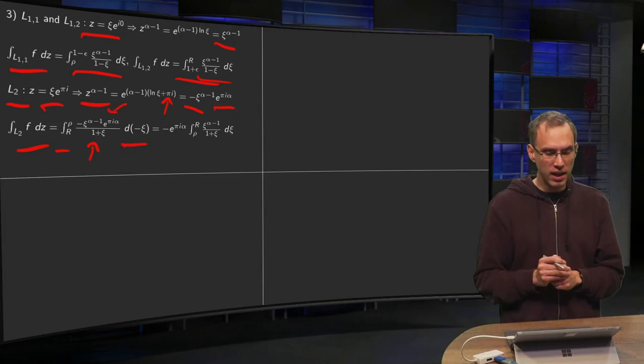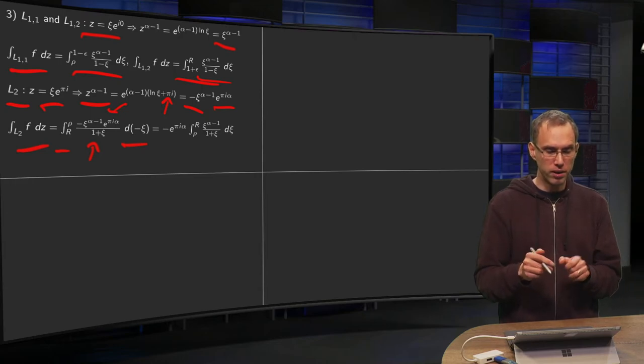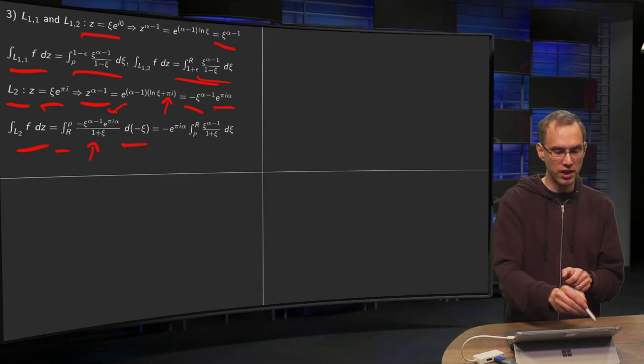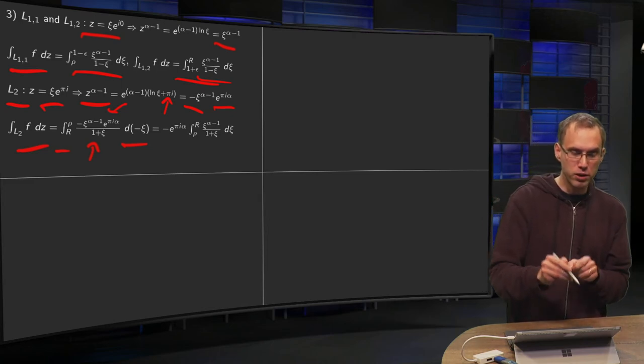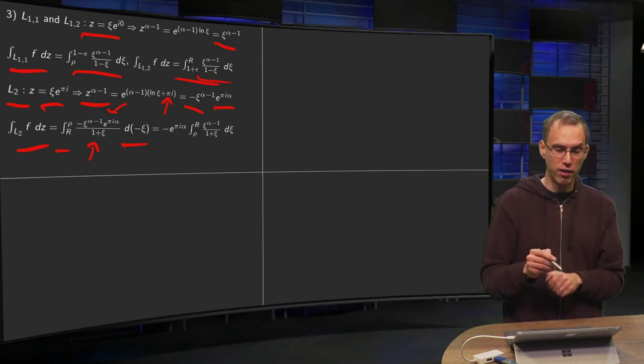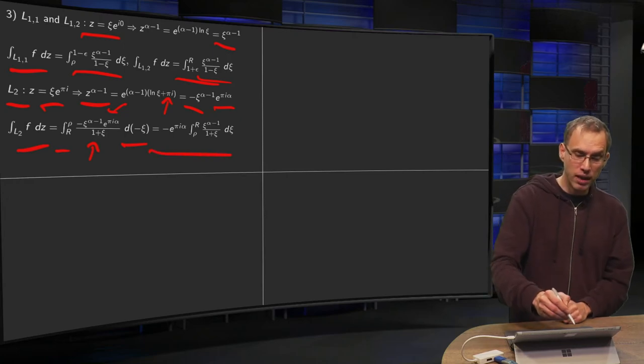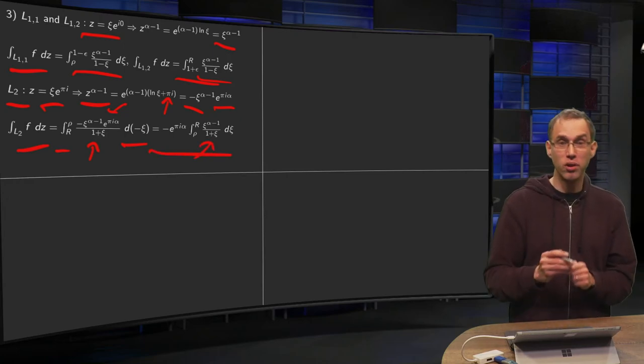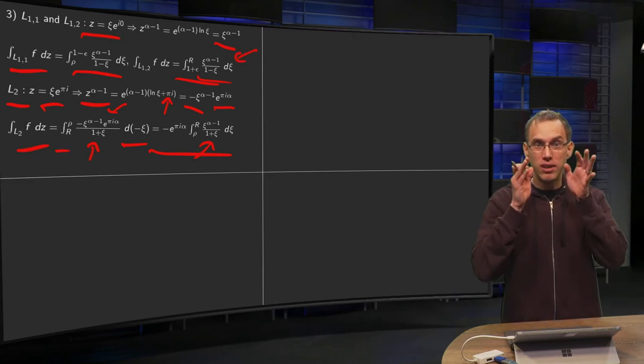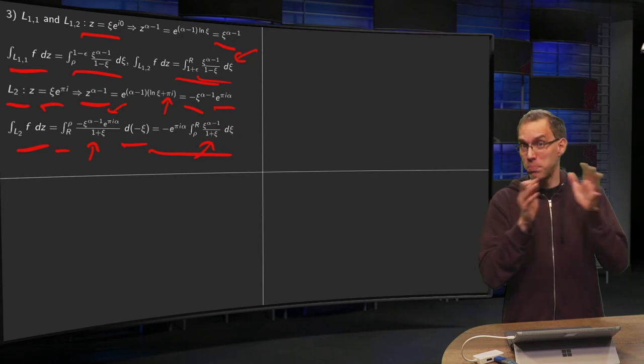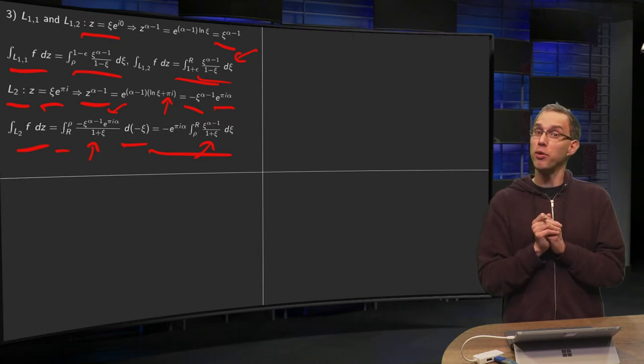So just use the minus sign and the d minus sign to change the boundaries r and rho. And just put the minus e to the power pi i alpha in front. Then we are over there. But note that we now got a different integral as well compared to the ones over here. So this spells, in principle, danger. Let's see whether we survive.